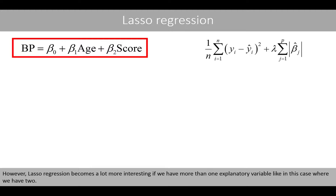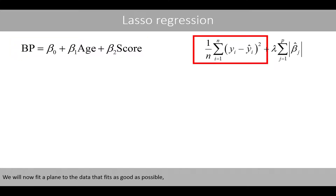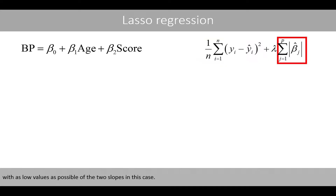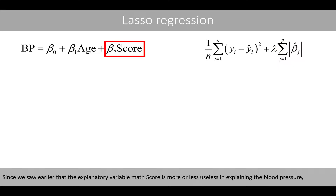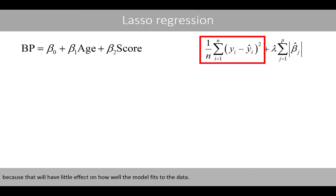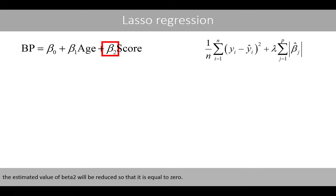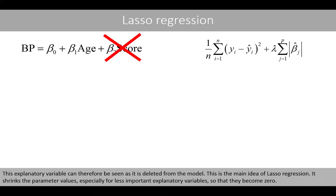However, LASSO regression becomes a lot more interesting if we have more than one explanatory variable, like in this case where we have two. We will now fit a plane to the data that fits as well as possible, with as low values as possible of the two slopes. Since the explanatory variable math score is more or less useless in explaining the blood pressure, the algorithm will especially reduce the value of this parameter, because that will have a small effect on how well the model fits the data. For a given value of lambda, the estimated value of beta_2 will be reduced so that it is equal to zero. This explanatory variable can therefore be seen as deleted from the model. This is the main idea of LASSO regression — it shrinks parameter values, especially for less important explanatory variables, so that they become zero.